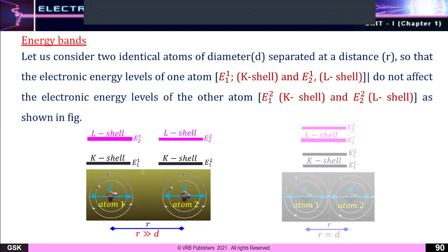Consider two identical atoms of diameter D separated at a distance R, measured from center to center. This distance R is greater than the diameter of the identical atoms. The electronic energy level E₁,₁ means the first energy level of the first atom. E₂,₁ means the second energy level of the first atom. That is, the second energy level is the L-shell, and the first energy level is the K-shell.